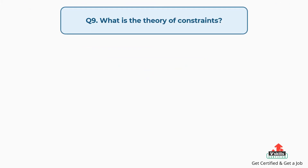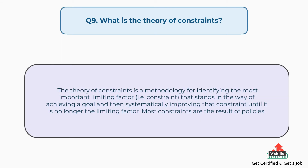Question number nine: What is the theory of constraints? The theory of constraints is a methodology for identifying the most important limiting factor — the constraint — that stands in the way of achieving a goal, and then systematically improving that constraint until it is no longer the limiting factor. Most constraints are the result of policies.